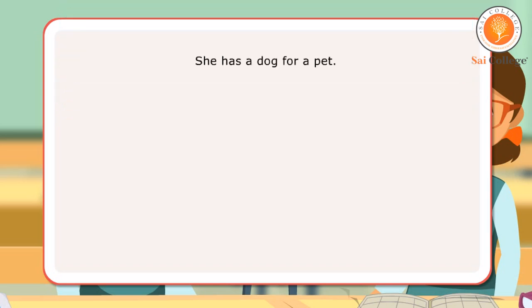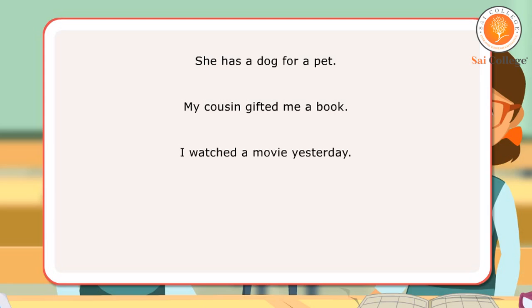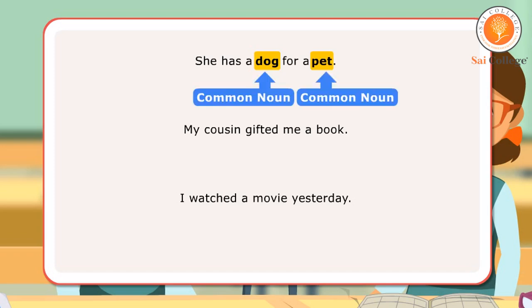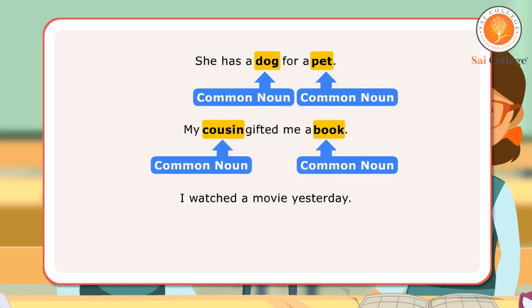Let us look at a few sentences. She has a dog for a pet. My cousin gifted me a book. I watched a movie yesterday. In the first sentence, dog and pet are common nouns as they refer to a general class. In the next sentence, cousin and book are common nouns as they do not refer to any specific person or thing. In the third sentence, movie is a common noun as it does not speak of any particular movie.